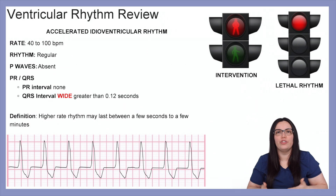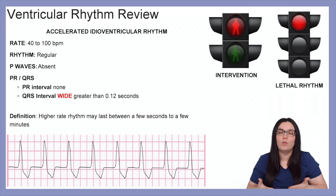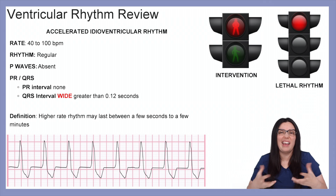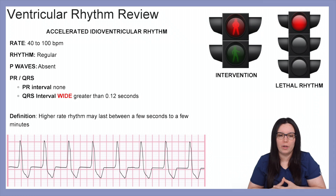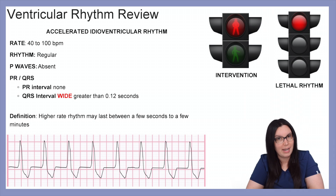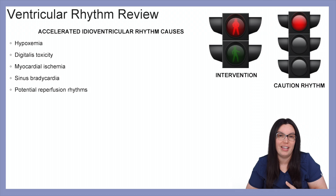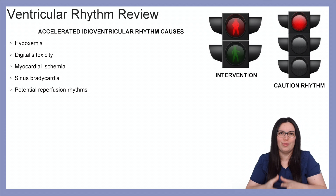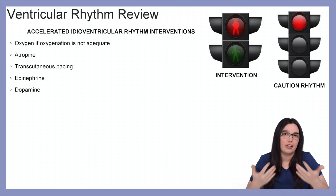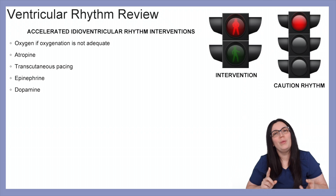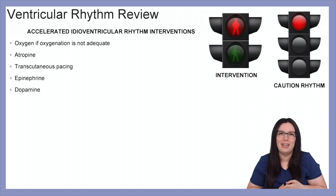Lastly, we're going to look at our accelerated idioventricular rhythm. This rate is going to be between 40 to 100 beats per minute. The rhythm will be regular and of course P waves will be absent. Because P waves are absent, the PR interval will not be seen and the QRS interval will remain wide, ugly, disgusting — greater than 0.12 seconds. The definition for this rhythm is a higher rate rhythm that may last between a few seconds to a few minutes. Causes include hypoxemia, digitalis toxicity, myocardial ischemia, sinus bradycardia, and potential reperfusion rhythms. Interventions: oxygenation if less than 94%, atropine, consider transcutaneous pacing, epinephrine, and dopamine.